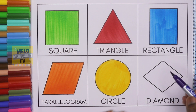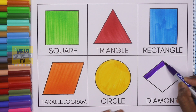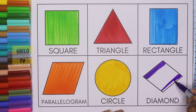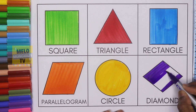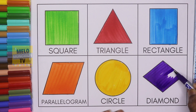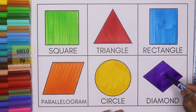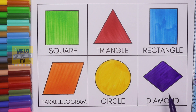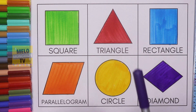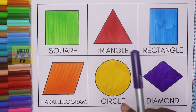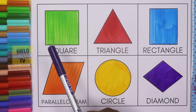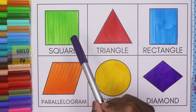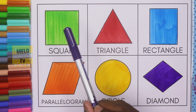Let's color it. This shape is called diamond and the color is purple. So let's repeat once again. The first one is square — square has four sides and all the sides are equal, and the color inside is green.